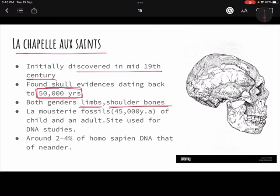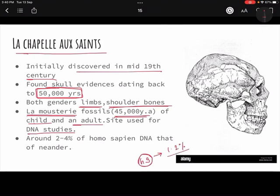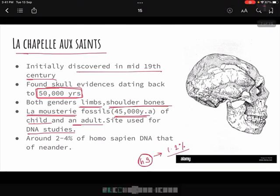La Moustier in France yielded fossils around 45,000 years old — including both a child and an adult. This site is used for DNA studies. Significantly, today's Homo sapiens carry around 1–2% Neanderthal genes, and this percentage is even higher — around 2–4% — in European populations, because Neanderthals were predominantly found there.